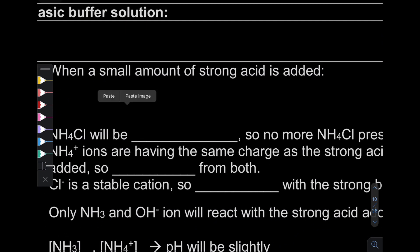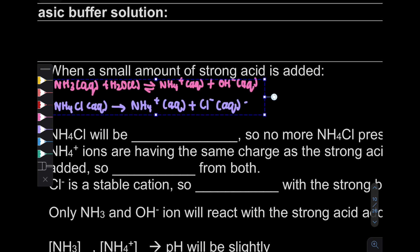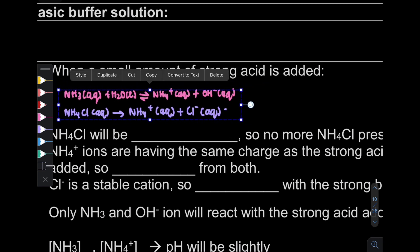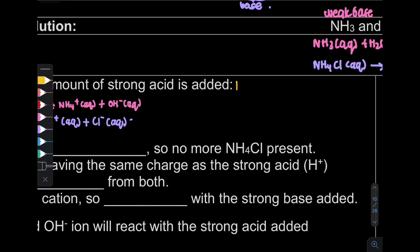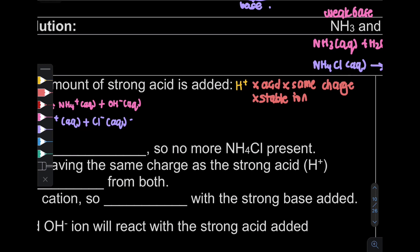Let's look at case A: when a small amount of strong acid is added. Strong acid means we're going to add H+. When we add acid, H+ will not react with acid — it doesn't want to react with the same charge. It also doesn't want stable ions. It prefers to react with a base, preferably at high concentration.